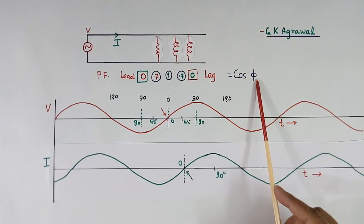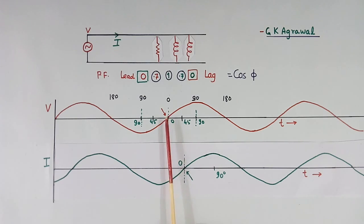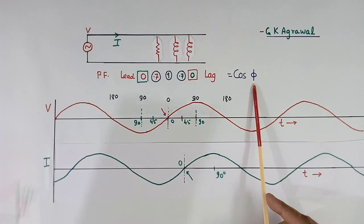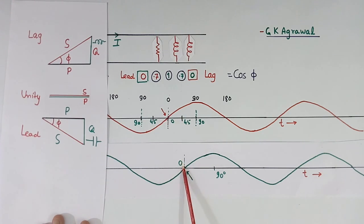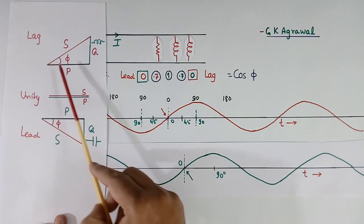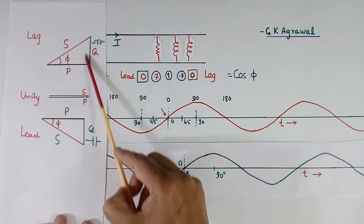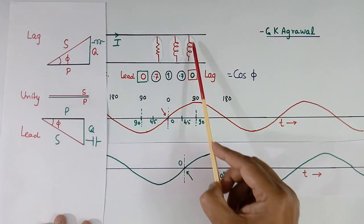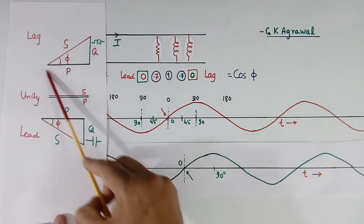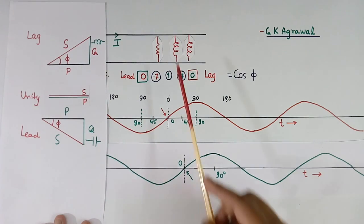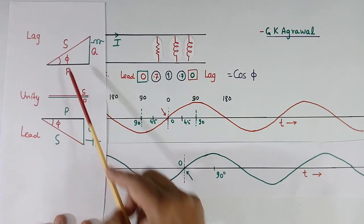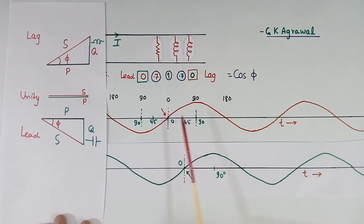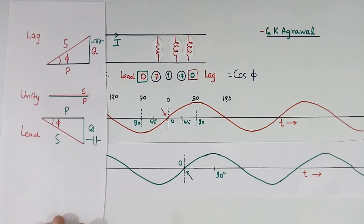Power factor is cos phi, where phi is the angle between the zero crossings of voltage and current. This is one method of finding power factor. Another method is using the power diagram. So there are two methods: one using the angle between zero crossings of voltage and current, and the second one using the power diagram — where this is the power flowing in the resistor, this is the power flowing in the inductor, and this is the total power. If R and L are there, the power diagram will be like this. If a capacitor is there, the diagram will be like this. And if a pure resistor is there, the diagram will be like this, and the angle between P and S will be zero. So this angle between the zero crossings and the power diagram angle are all the same. Today we will close here.